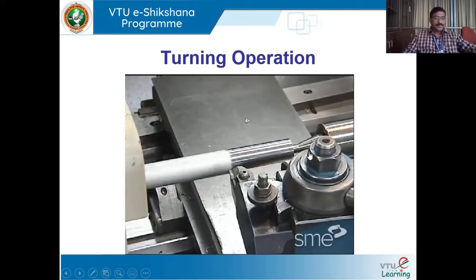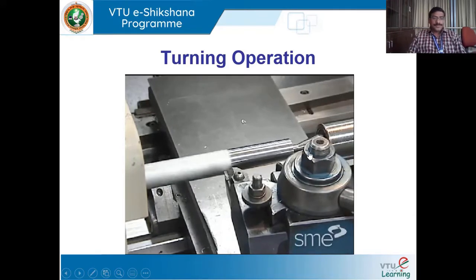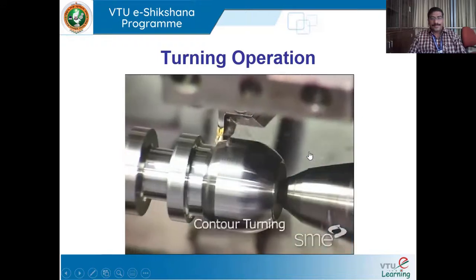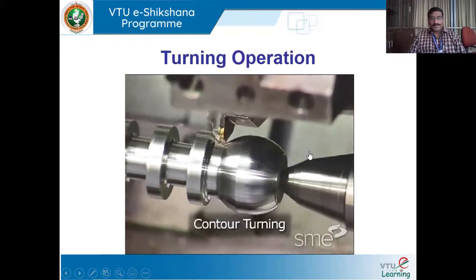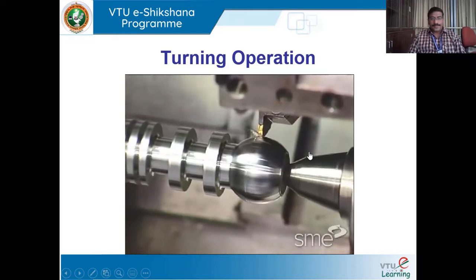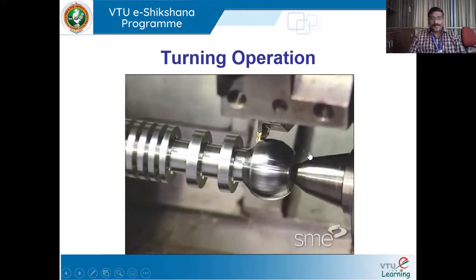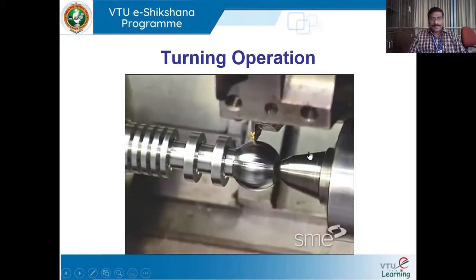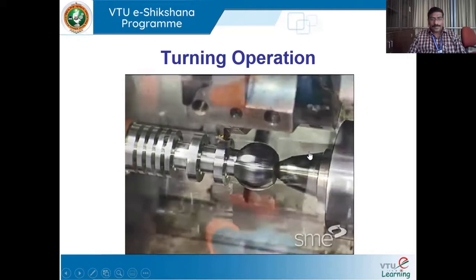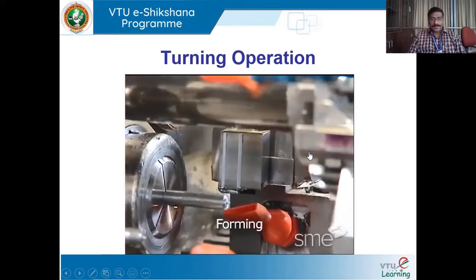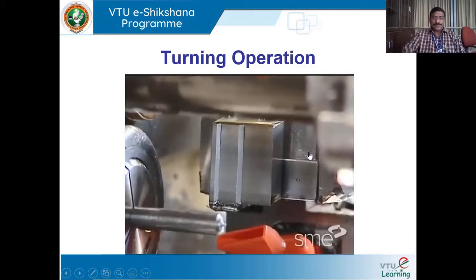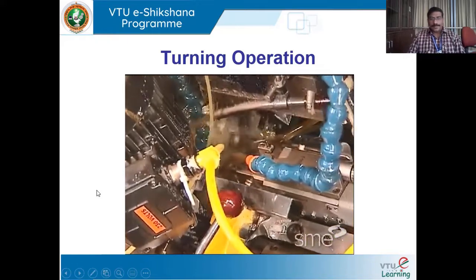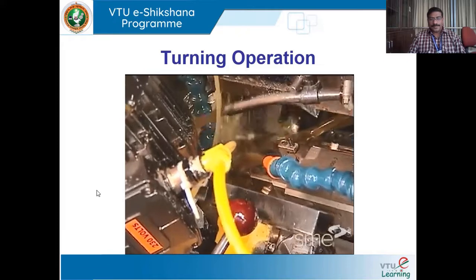Short, steep tapers can be turned using a compound rest. Contour turning, or profiling, was formerly performed by having the single-point cutting tool trace a template of the desired profile shape. This has largely been replaced by CNC turning, where the desired contour is programmed into the machine. Forming is another alternative for generating complicated shapes — the tool, having the desired geometry, is advanced perpendicular to the axis of rotation, reproducing the tool shape in the workpiece.